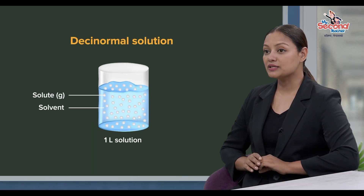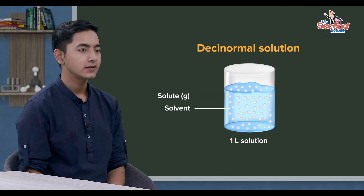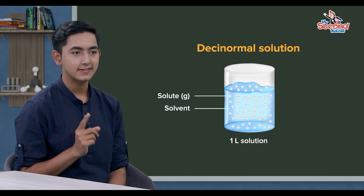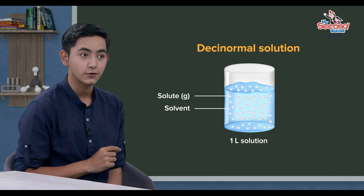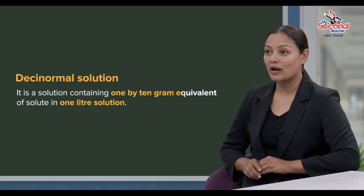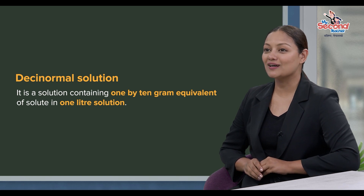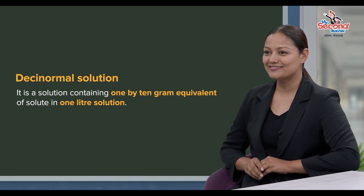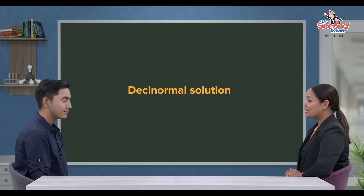Now we can talk about deci-normal solution. A deci-normal solution contains 1/10 gram equivalent of solute in 1 liter solution. This is denoted by N/10.